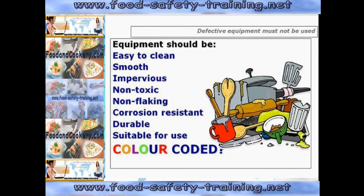You must not use defective equipment in a kitchen. Equipment should be easy to clean, smooth — so there are no cracks, no holes, no awkward corners to clean which could hold food material and bacteria. It should be impervious or non-absorbent, which again rules out wood. It should also be non-flaking, corrosion resistant to rust and oxidisation of aluminium, durable, suitable for use, and colour coded.